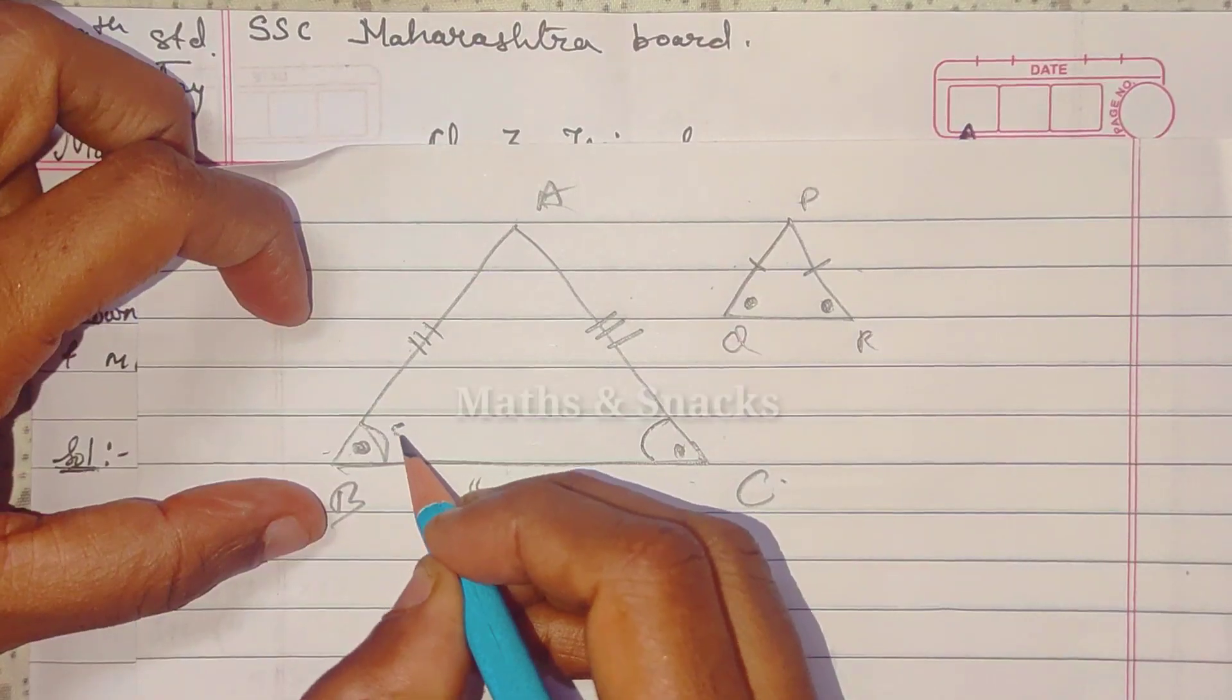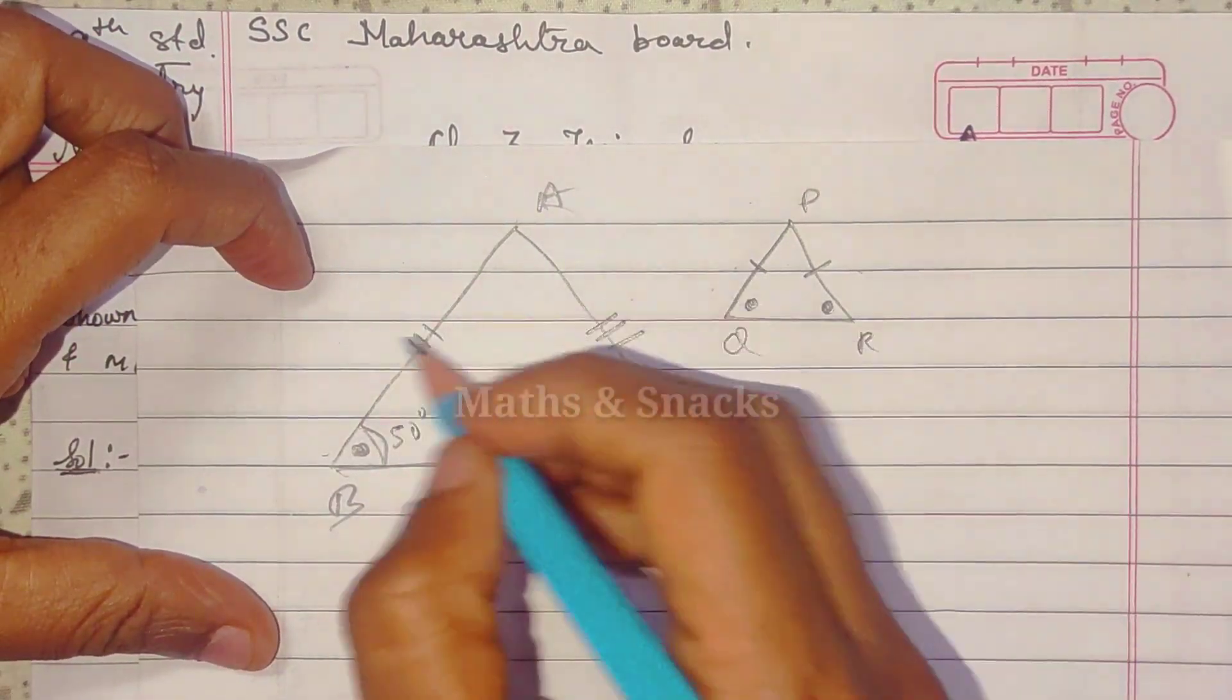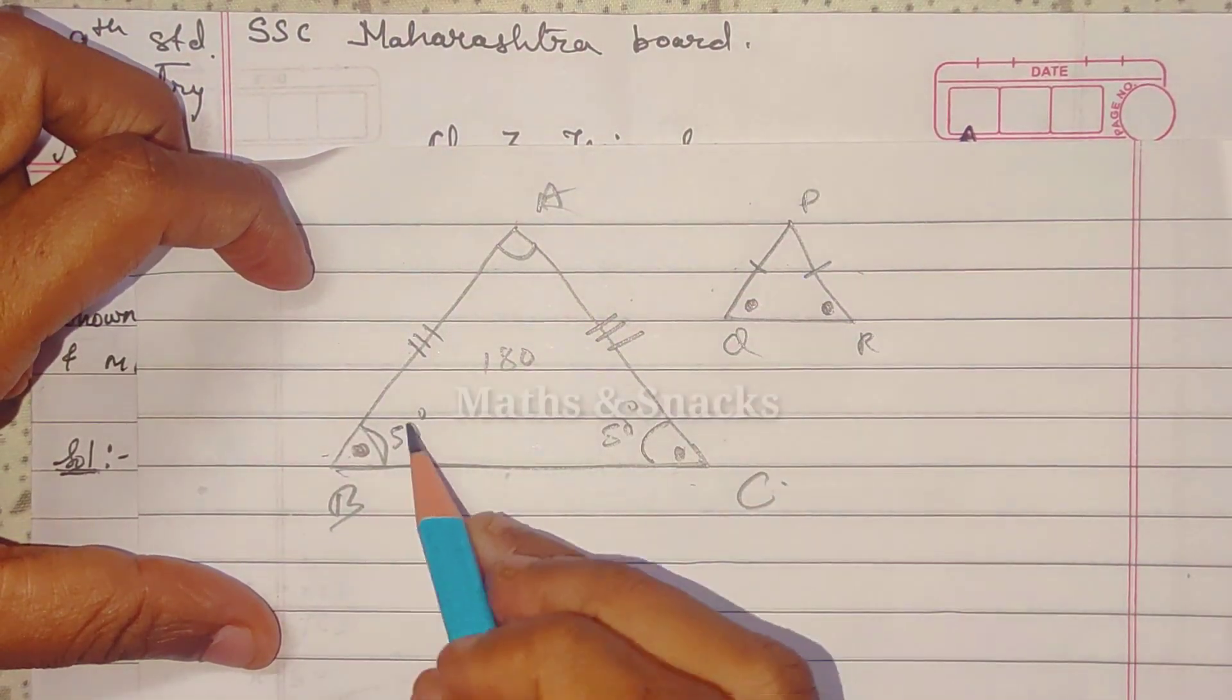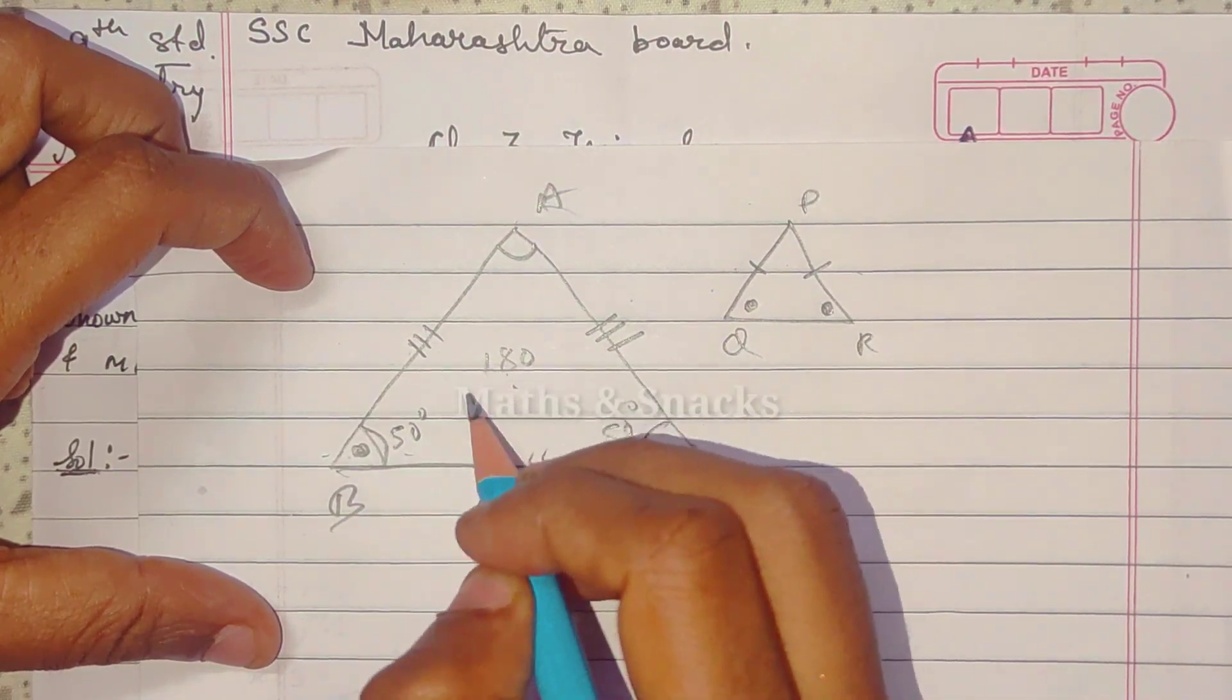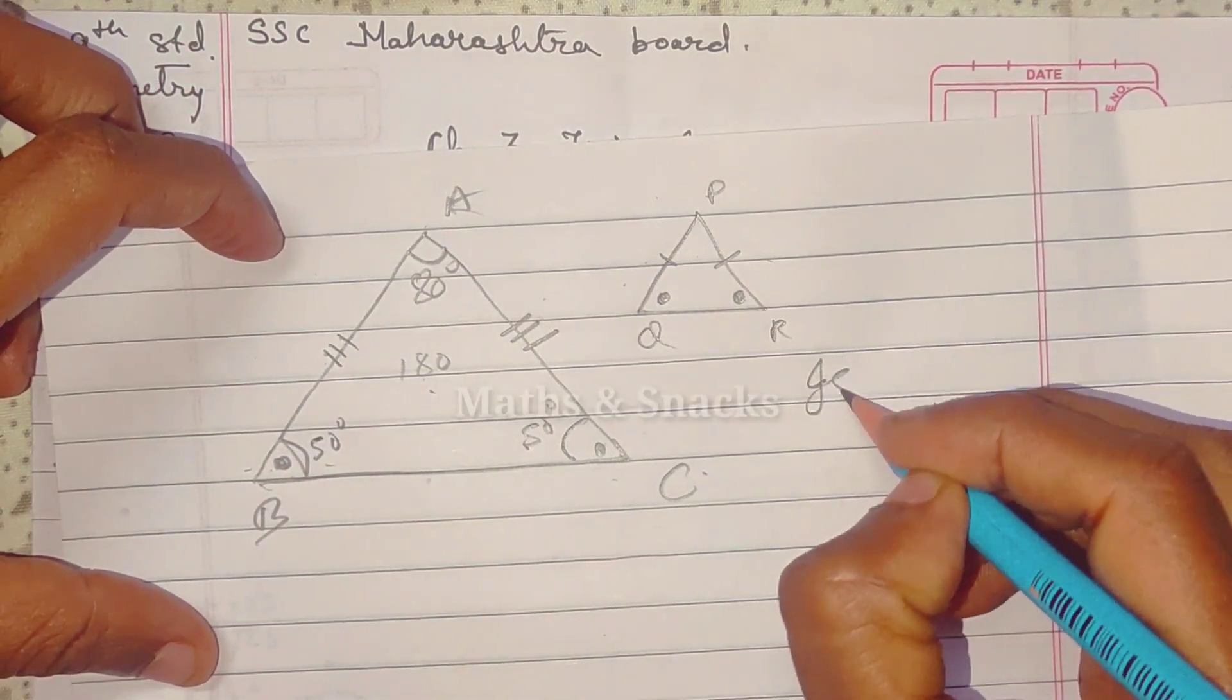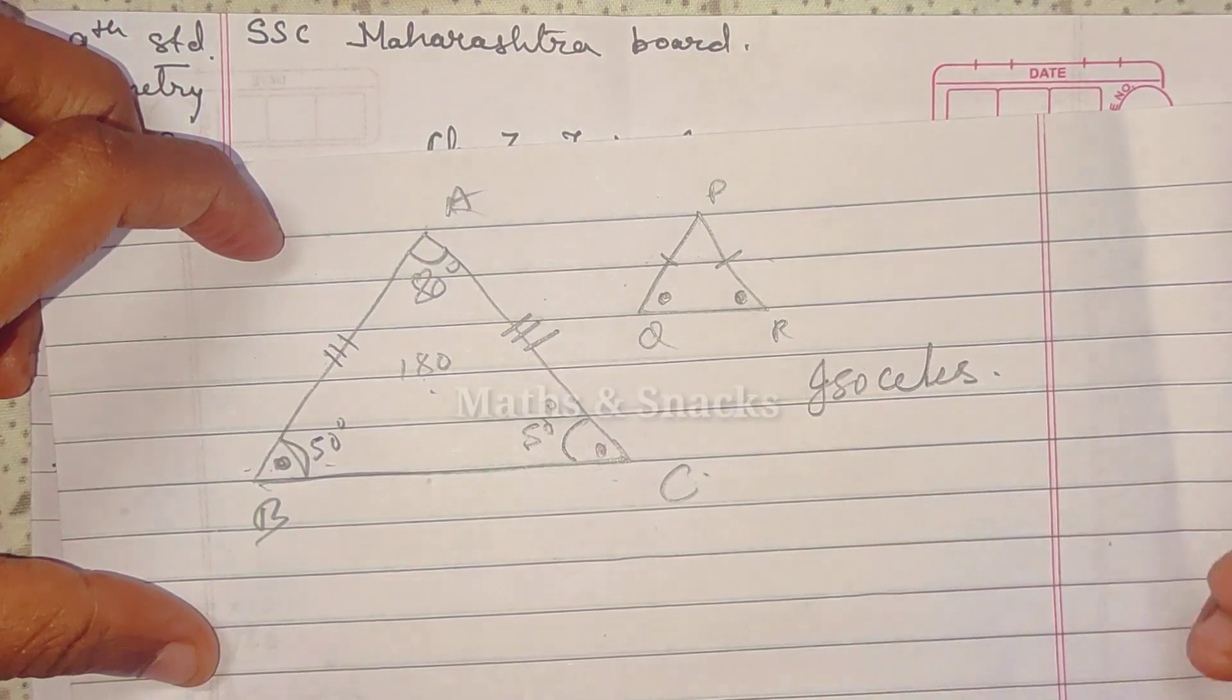So if this measure is 50, then indirectly this is also 50. And a triangle is 180 degrees, so the third one we can automatically find. This is 80. So, this is the logic of Isosceles Triangle.